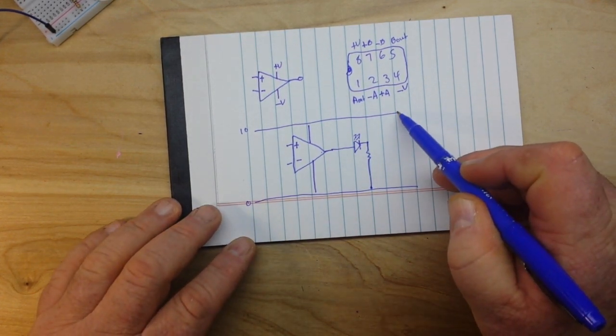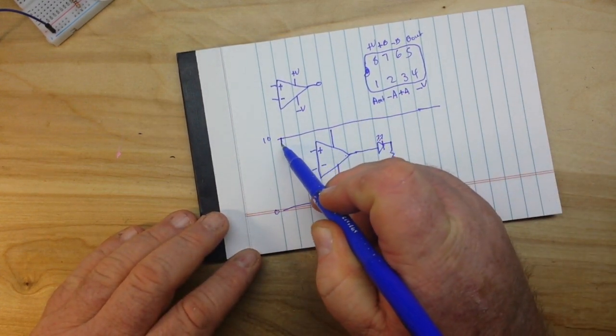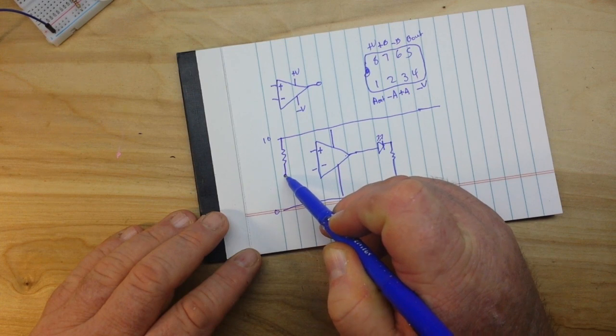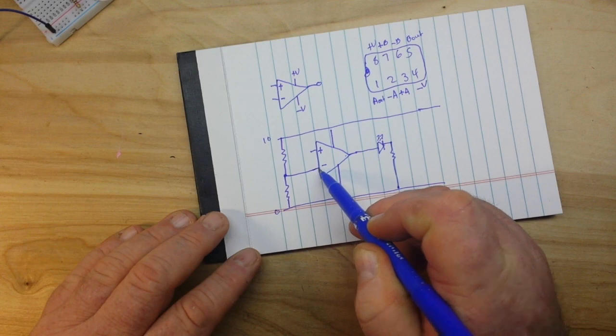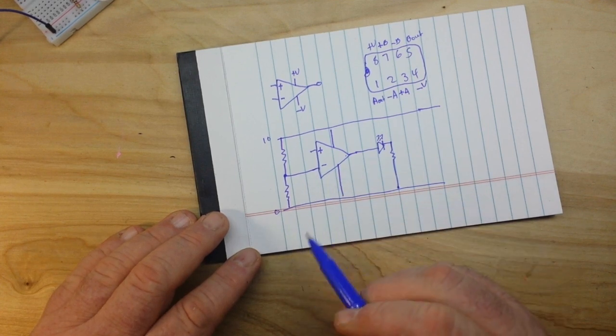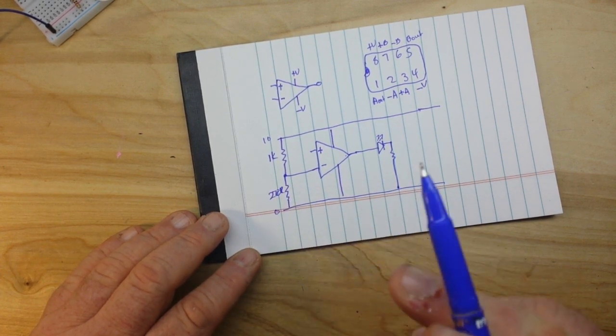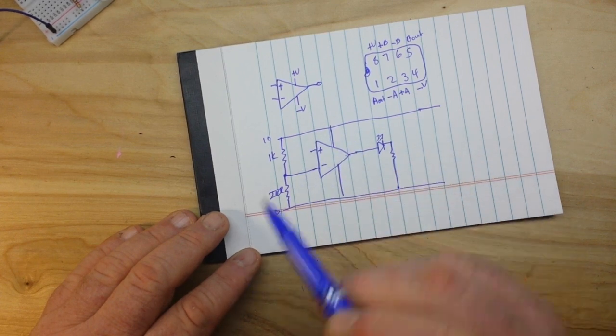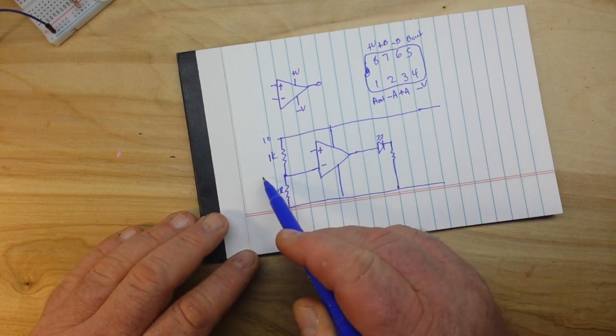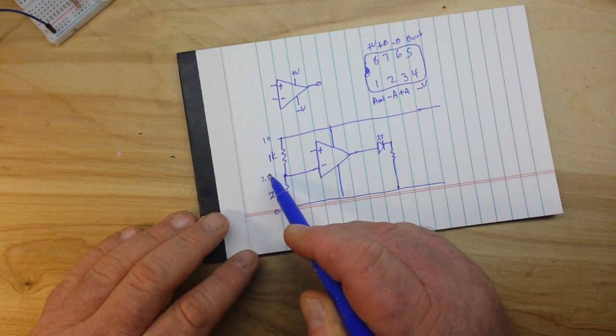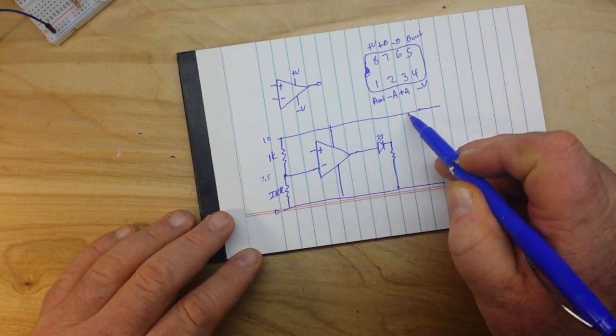Now what we're going to add into this circuit here to make it work - first of all, we're going to put in a voltage divider, and that is going to be our inverting input. We're going to use 1k and 270 ohm, and that will be our trigger point. With our 10 volts, I think it gives us about, I'm guessing here, right around seven and a half volts.